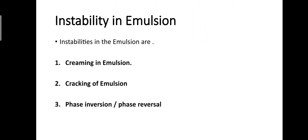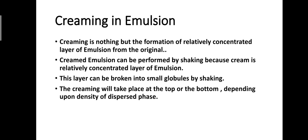Instabilities in emulsion — there are three types: creaming, cracking, and phase inversion. Creaming is the formation of a relatively concentrated layer of emulsion from the original. Cream emulsions can be reformed by shaking because the layer can be broken into small globules. Creaming will take place at the top or bottom depending on the density of the dispersed phase. Creaming is therefore reversible.